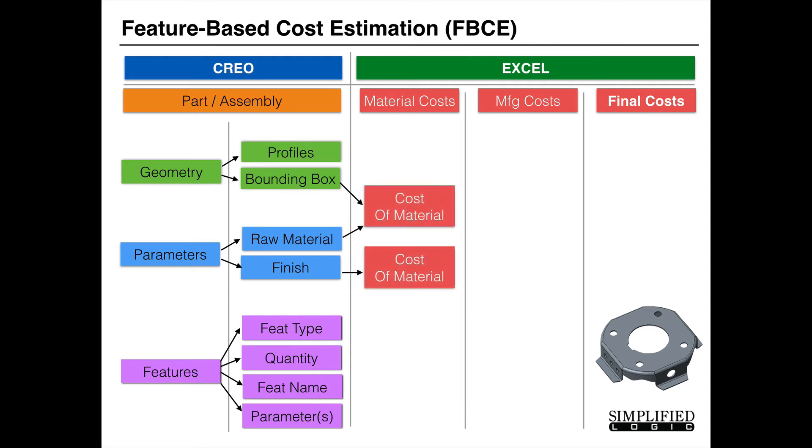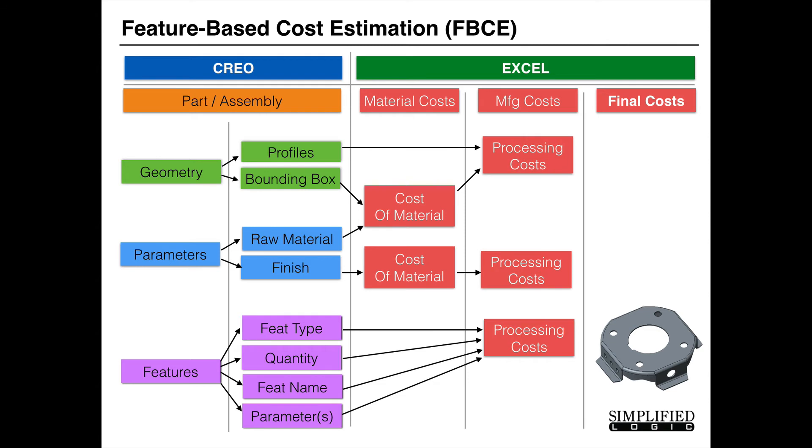Material costs are easily derived using simple calculations. For example, using the bounding box and raw materials as lookups to find out how much is there and what is it, or maybe the finish involved. And then you can extend that further to say, for example, if I'm dealing with a sheet metal part, I may want to calculate the number of profiles and the length of those profiles, combine those with the cost of material, and then combine everything together to obtain a final cost once I've done all my math.